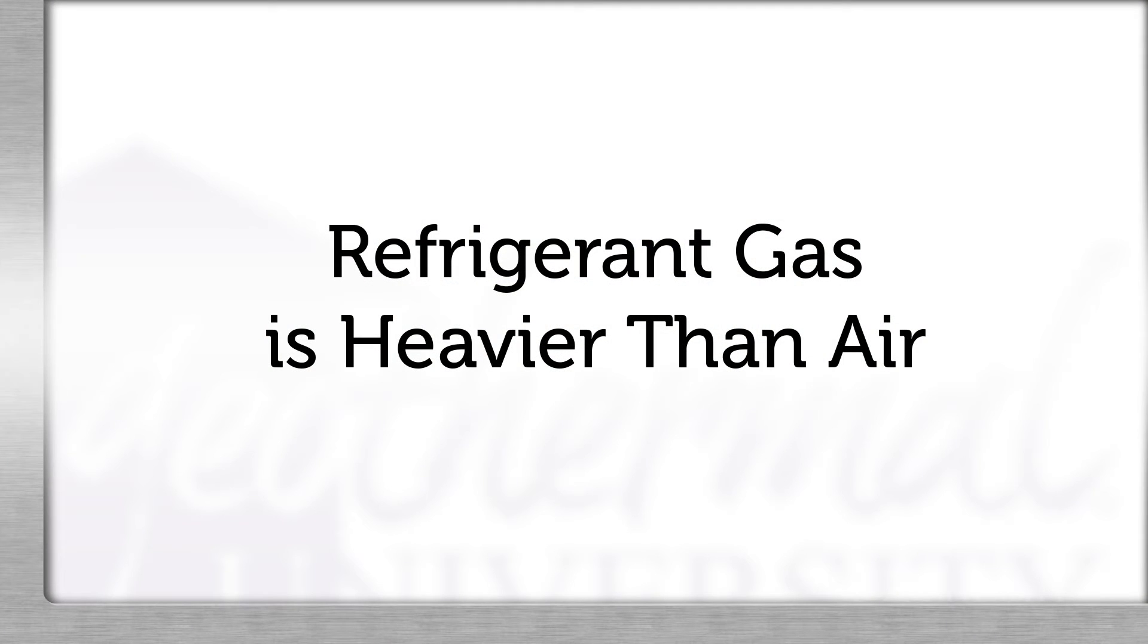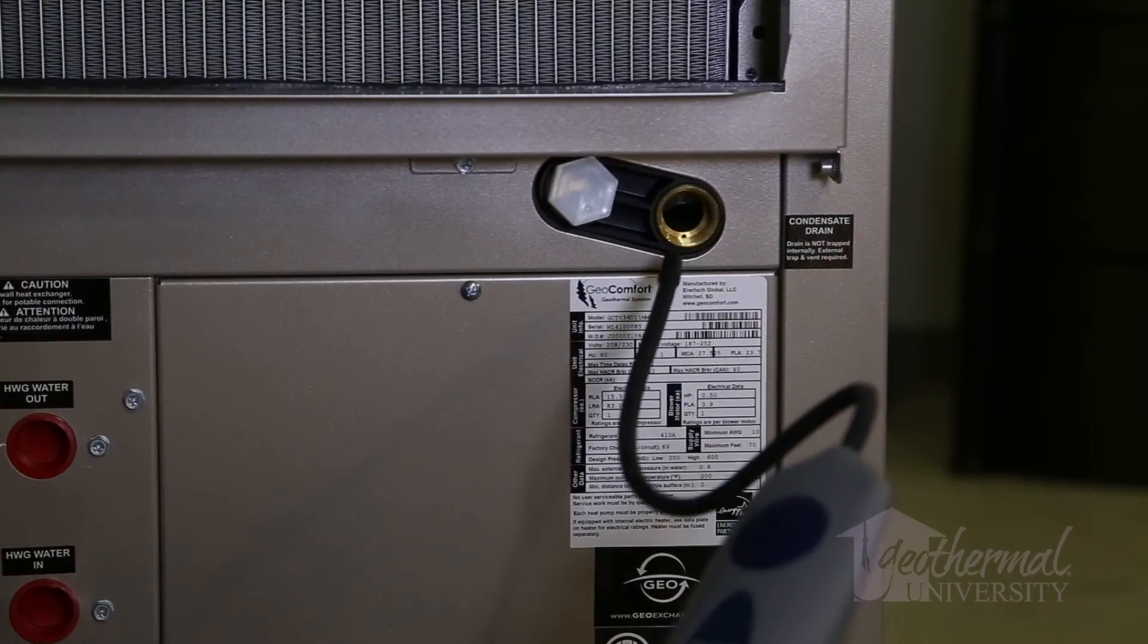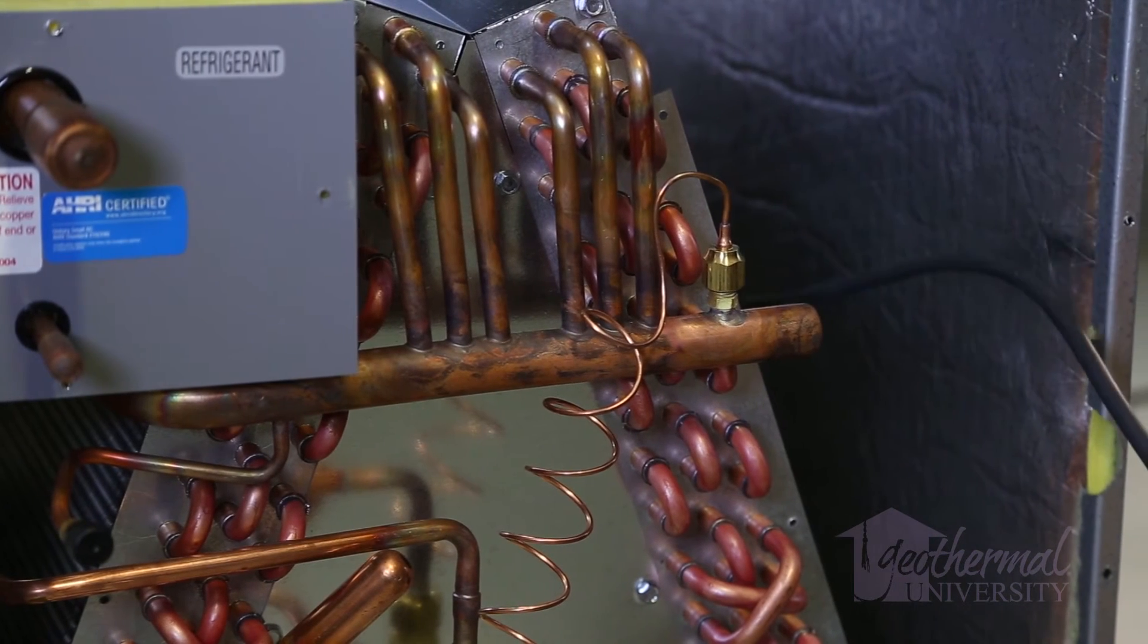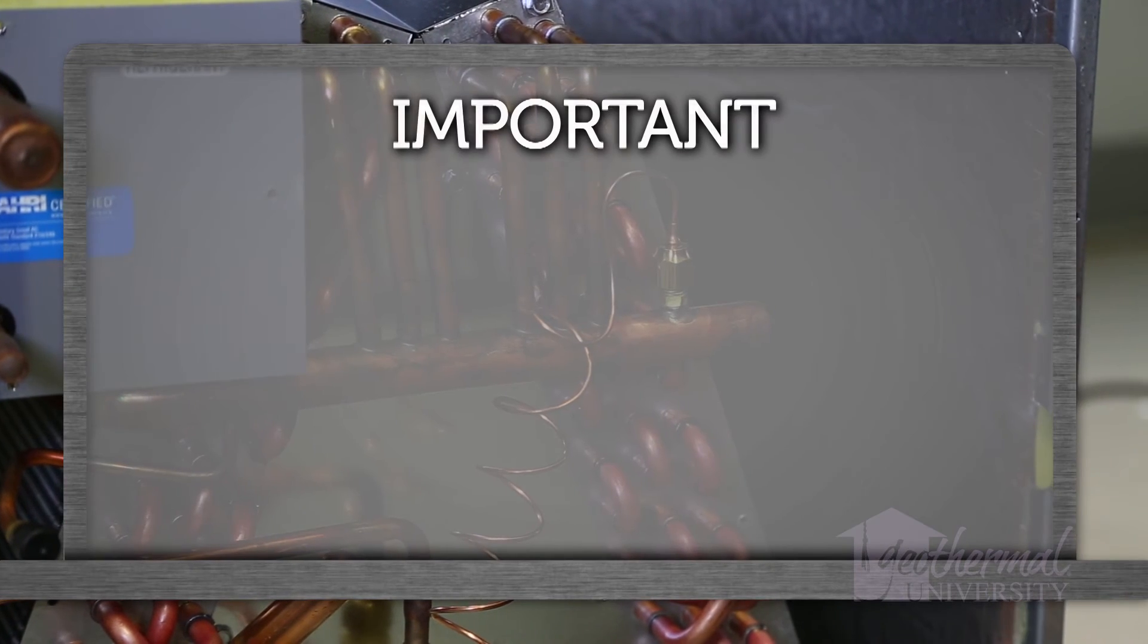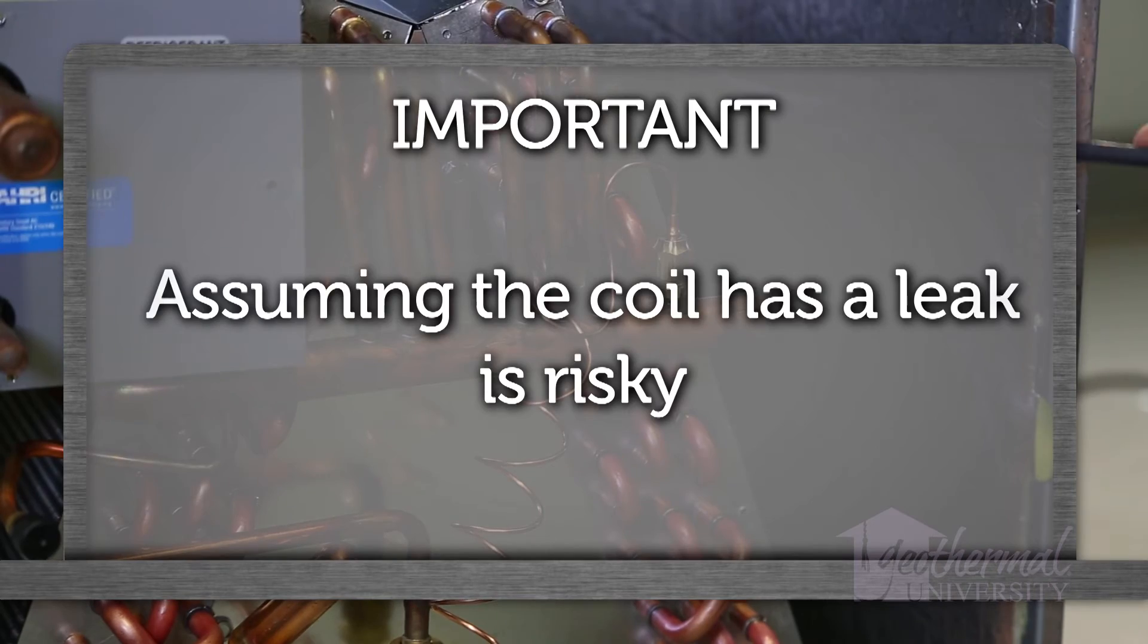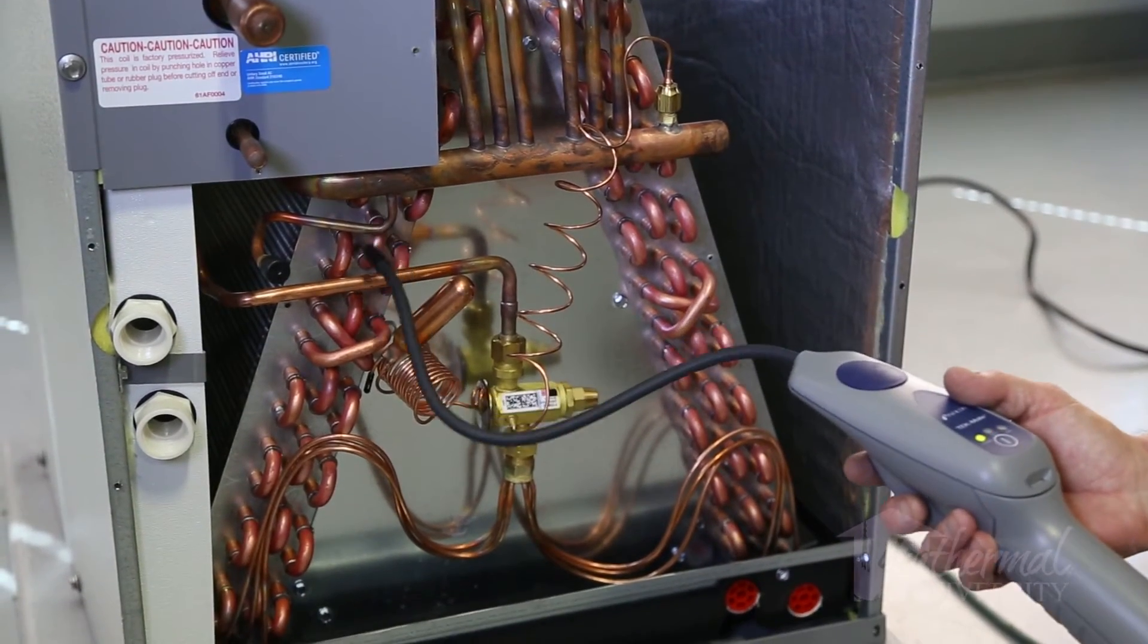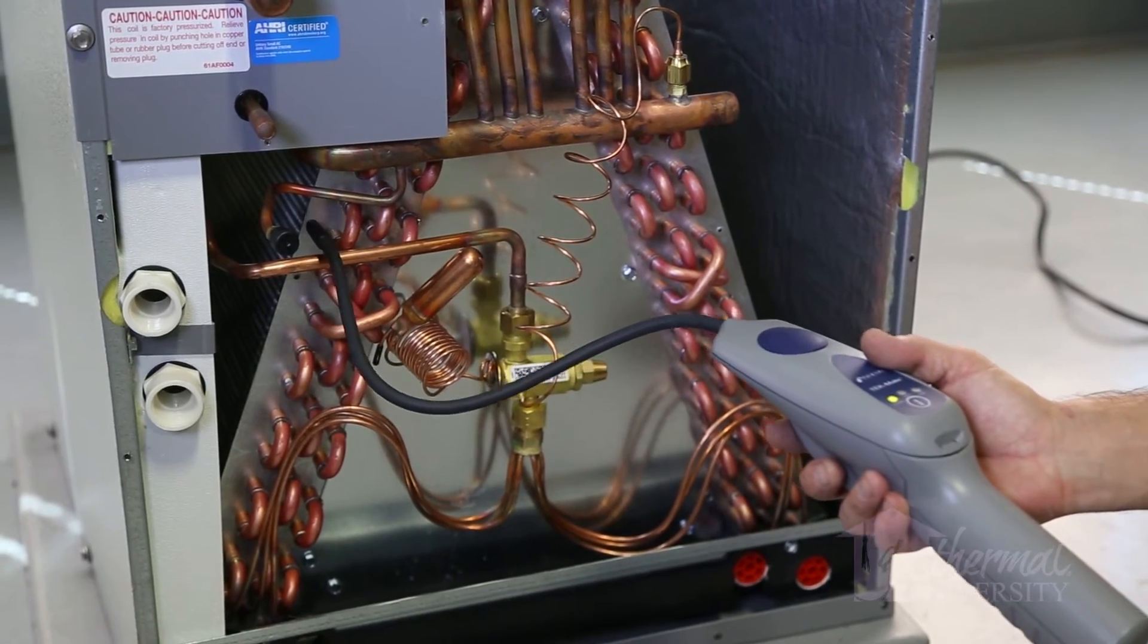Refrigerant gas is heavier than air and gravity will cause the gas to flow to the lowest point. If the evaporator section tests positive, we must expose the entire coil and investigate thoroughly. Assuming or guessing the coil has a leak is risky. A false positive test can lead to a wrong diagnosis and significant expense.